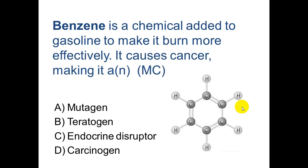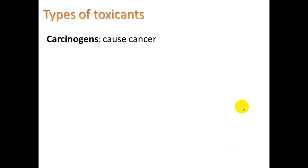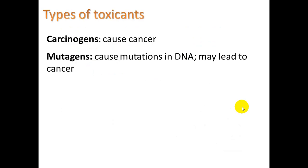Because benzene causes cancer, it is a carcinogen. Carcinogens cause cancer; mutagens cause mutations in DNA — they can change an adenine to a guanine, or a cytosine to a thymine. If you change the DNA of a gene whose job it is to regulate cell growth, that cell can begin to grow and multiply uncontrollably, creating a tumor.